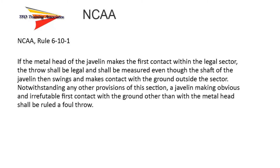Let's take a look at the applicable rules for each jurisdiction that addresses how the javelin must land. We will begin with NCAA Rule 610-1. The rule reads: if the metal head of the javelin makes first contact within the legal sector, the throw shall be legal and shall be measured, even though the shaft of the javelin then swings and makes contact with the ground outside the sector.